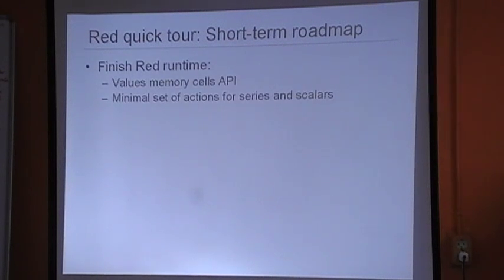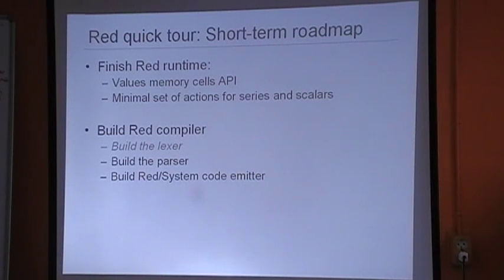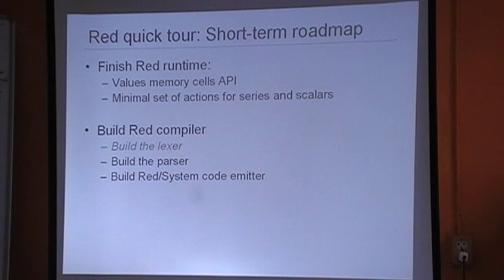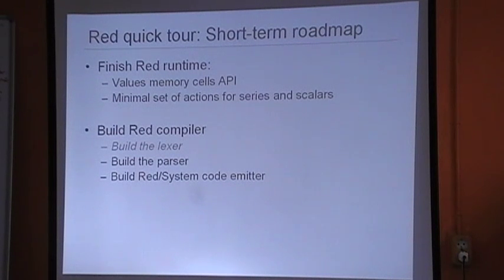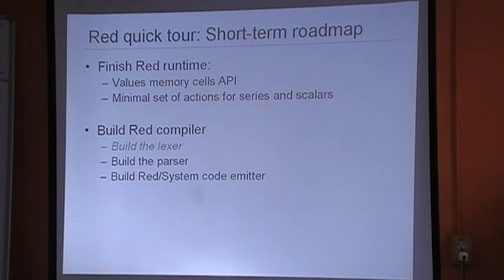The short-term roadmap is to finish the Red runtime as soon as possible to be able to build the compiler. For the compiler, the lexer is already implemented — we just need the parser and the code emitter. The parser in this case is the internal compiler tool that takes the output of the lexer and does the translation. The Red/System code emitter will be very simple because we emit Red/System source code directly rather than low-level machine code. So we are not that far from the first working version of the Red compiler built in Rebol.